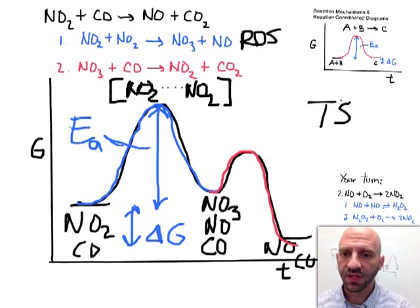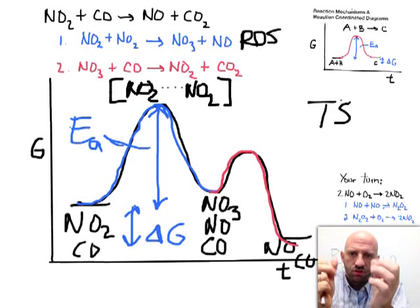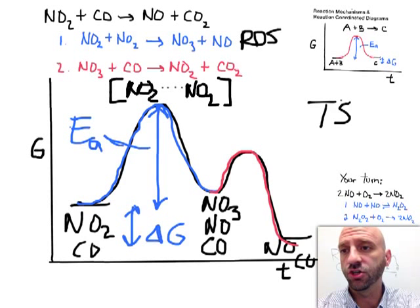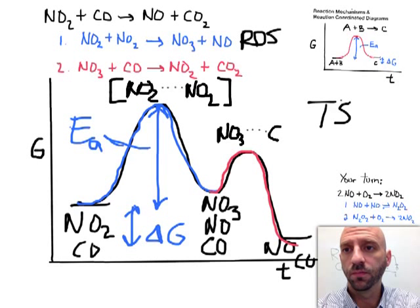The details of exactly how the two NO2's come together we're not going to worry about. We just know that at that moment two molecules are beginning to come together. Likewise, the transition state during the second step has an NO3 beginning to come together with a CO. So that's the transition state for the second step.